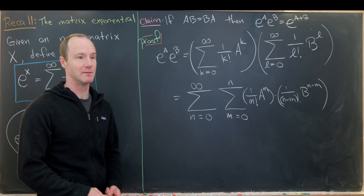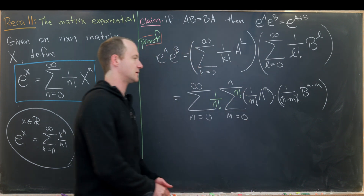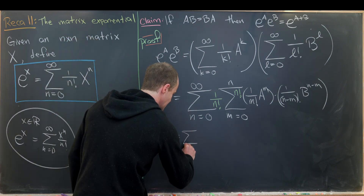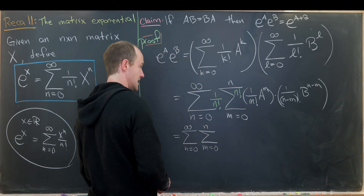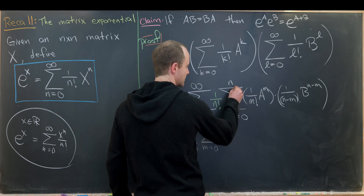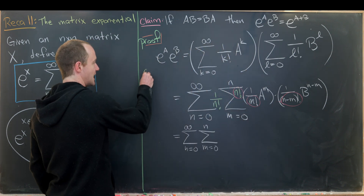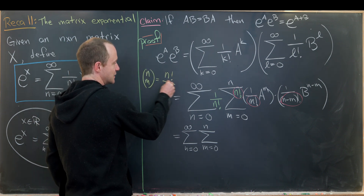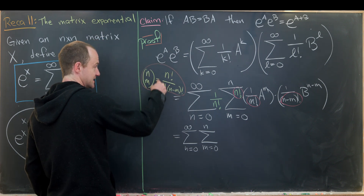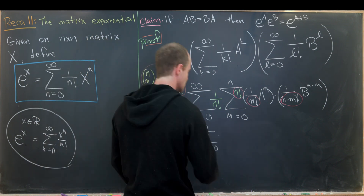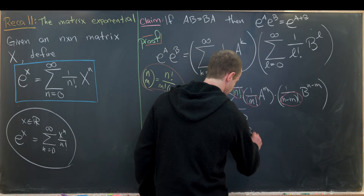Now we've got a double sum where the inside sum is finite. From here, I want to multiply by one in the form of one over n factorial times n factorial. Putting things together, this is the sum as n goes from zero to infinity of the sum as m goes from zero to n. We can put all of these numbers together — n factorial, m factorial, and n minus m factorial — and recall that the binomial coefficient n choose m is exactly n factorial over (m factorial times (n minus m) factorial). So we write this as n choose m times one over n factorial times A to the m times B to the n minus m.